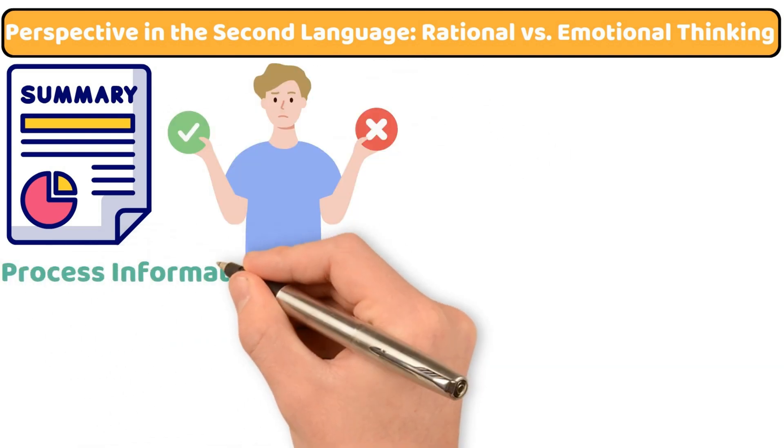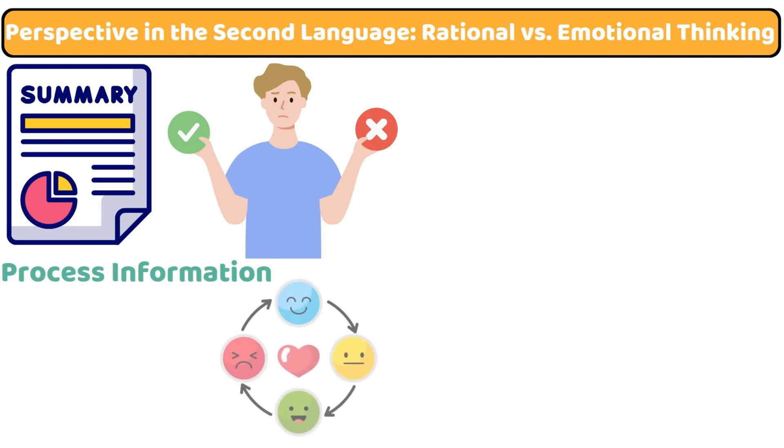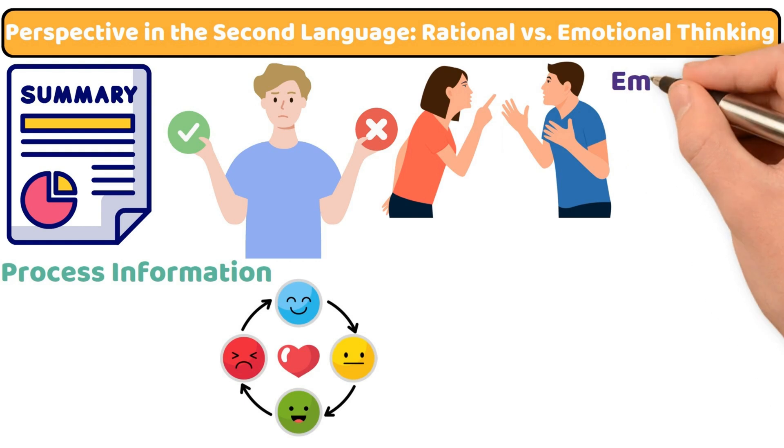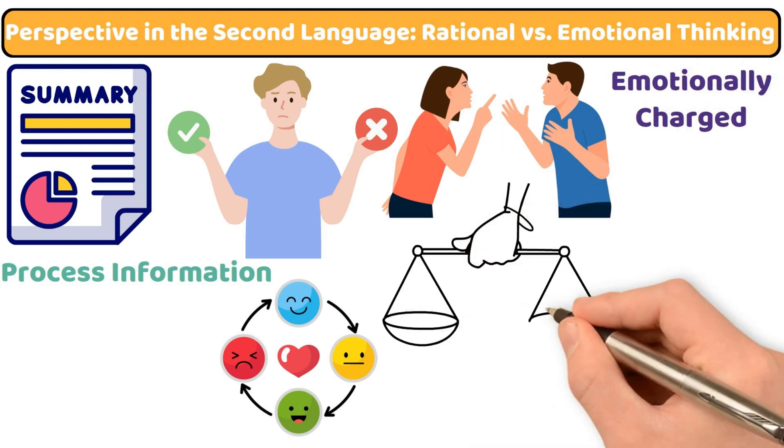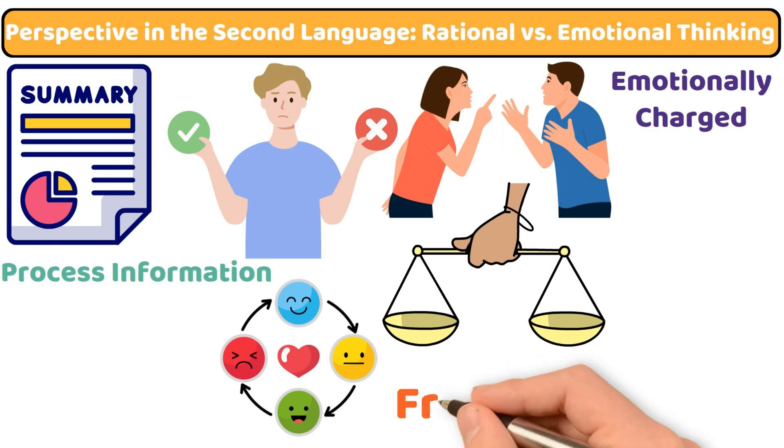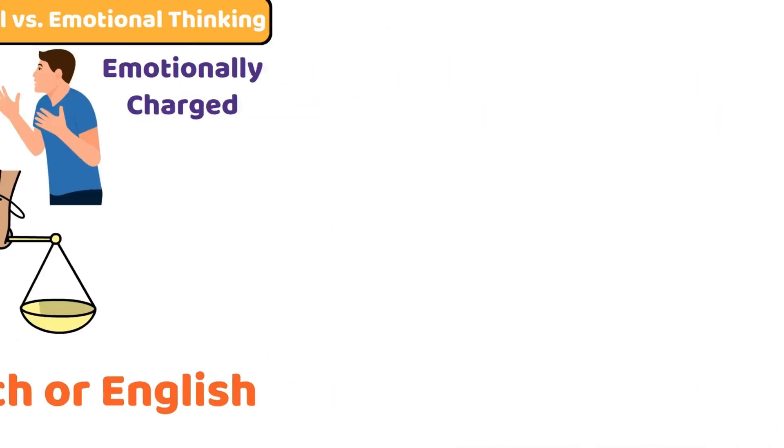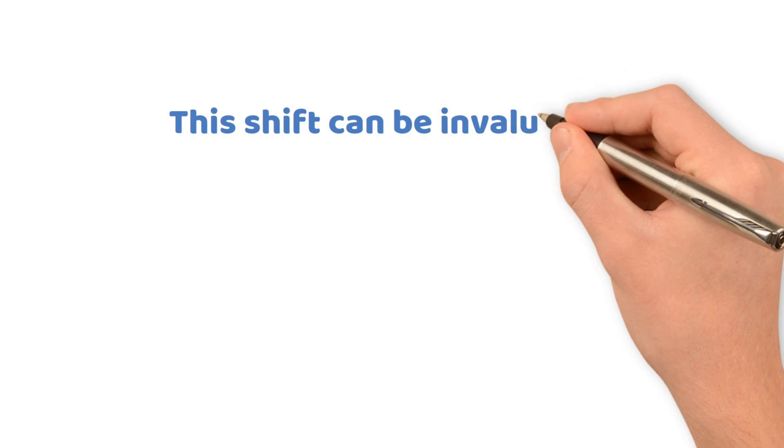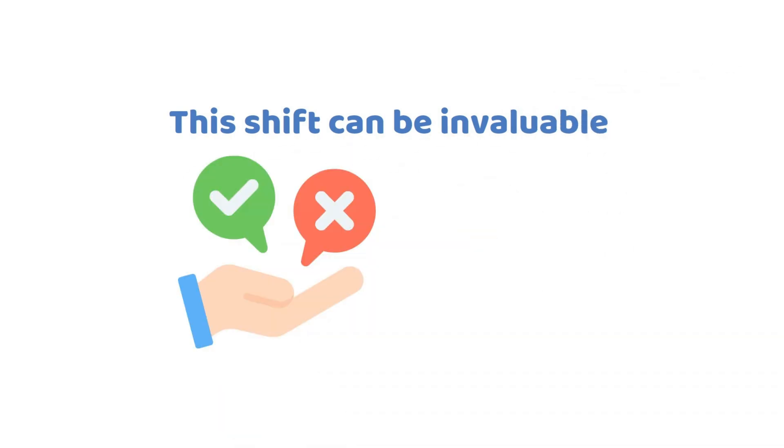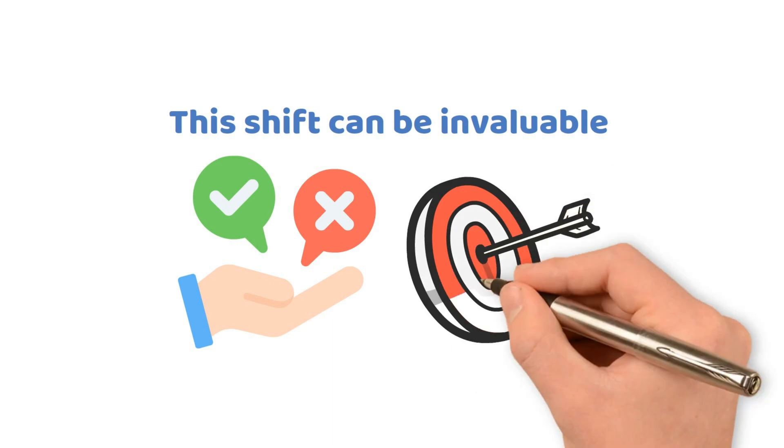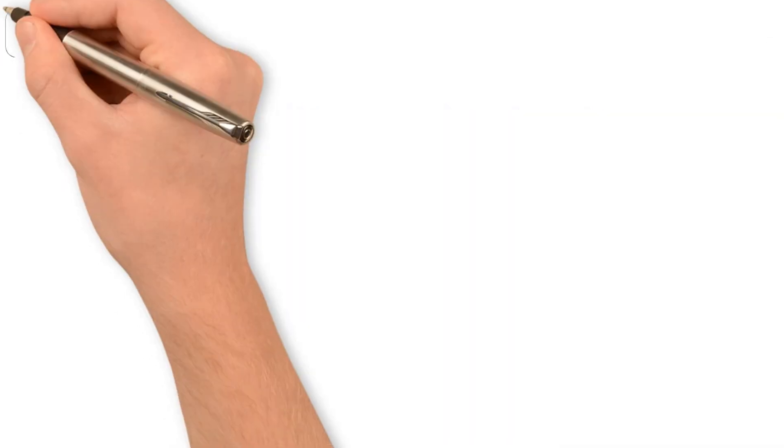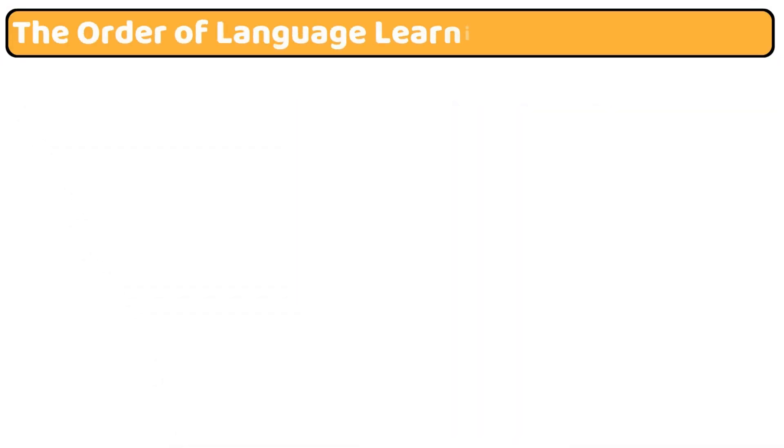Research has shown that people often make more rational decisions in their second language, perhaps because they process information with a bit more emotional distance. For example, an argument that might feel emotionally charged in my native Greek might come across as more analytical and manageable when I think it through in French or English. This shift can be invaluable, helping us make balanced decisions by detaching from strong emotions and seeing things from an objective viewpoint.